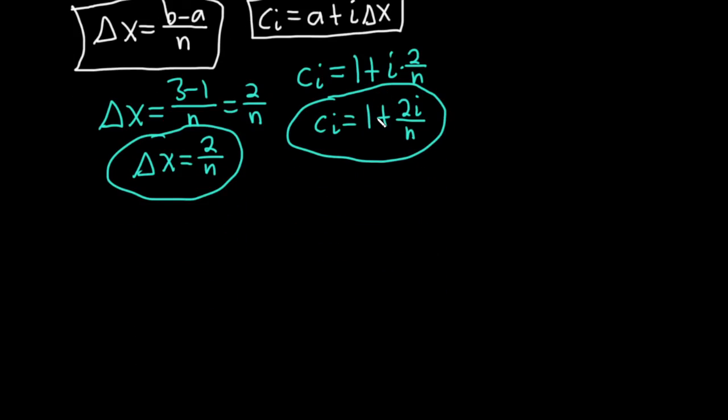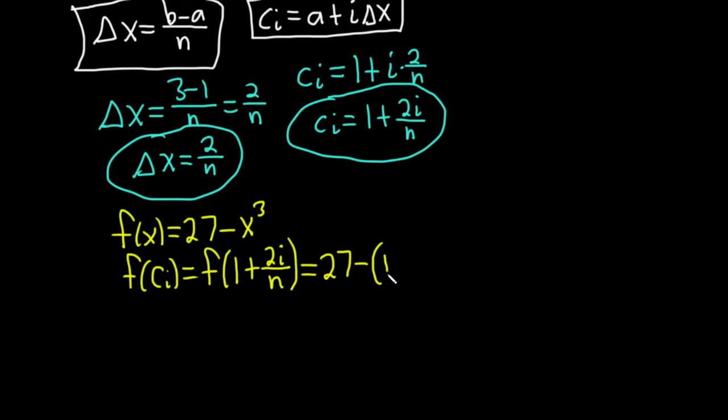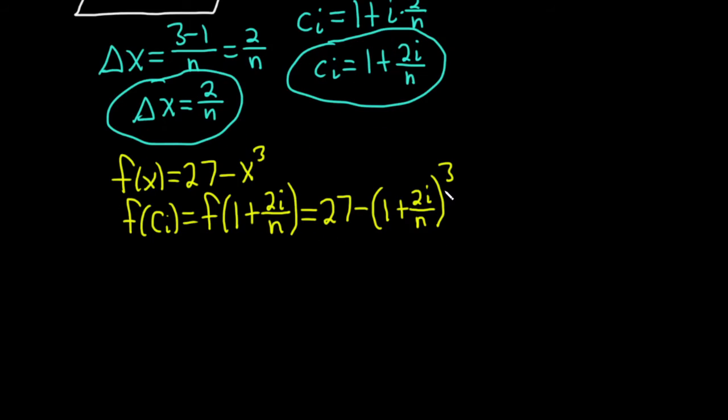Recall that f of x in this problem was 27 minus x cubed. So we want f of c sub i. That's the same thing as f of 1 plus 2i over n, which is equal to 27 minus parentheses 1 plus 2i over n cubed. Now we have to work this out which is a bit of a mess. I'm going to take another approach.